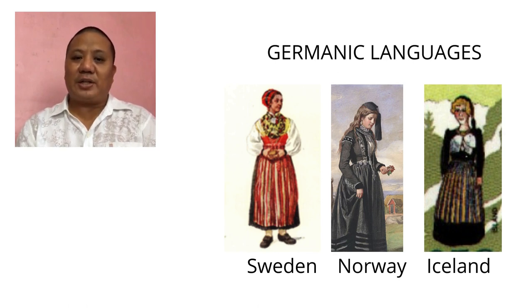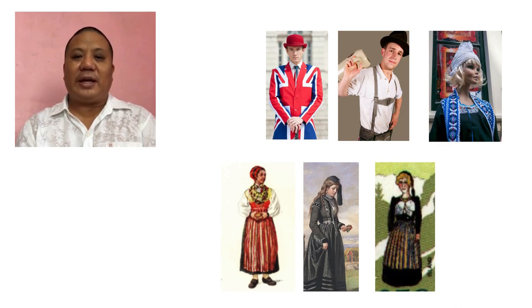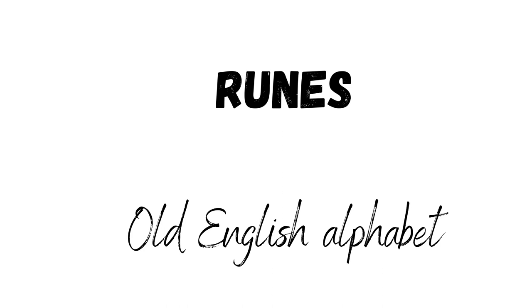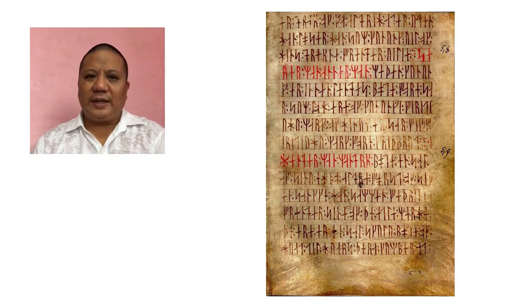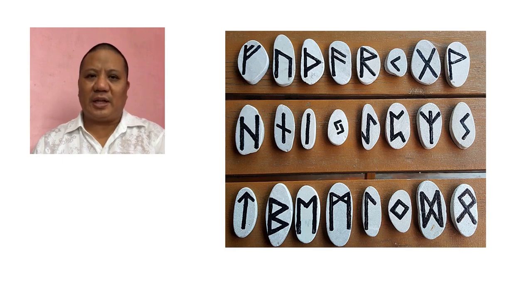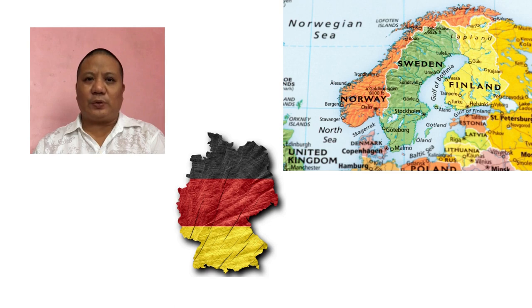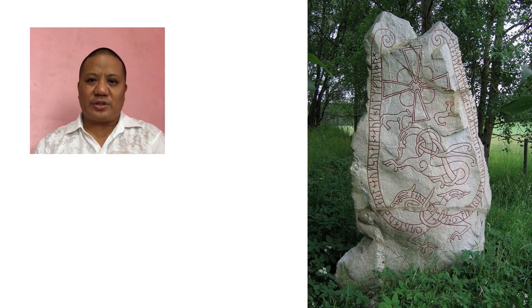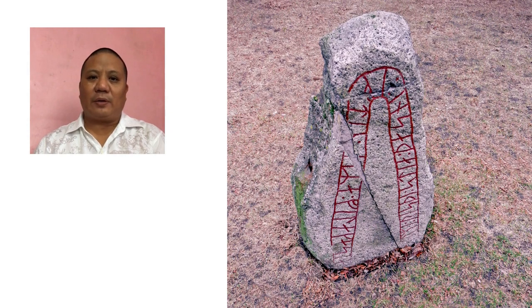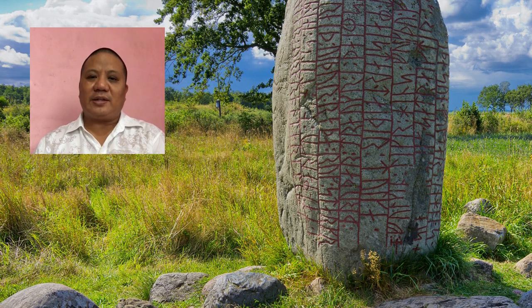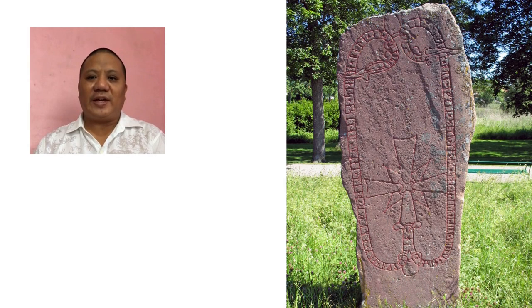Old English sounded very much like German and other languages. Old English was originally written using runes — the letters of the Old English alphabet. You probably would not be surprised to know that runes were also used throughout many parts of Germany and Scandinavia. What survives up to the present day are what are called rune stones — big pieces of rock written with rune letters. These rocks were usually memorial stones, erected as brightly colored, but the colors faded after time.